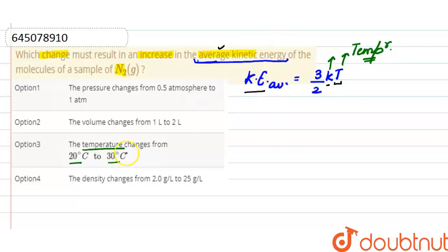So as we can see, only temperature change can change kinetic energy, so this option is correct. When temperature increases, there is an increase in average kinetic energy. In option two, volume changes, which doesn't affect average kinetic energy. In option one, pressure changes, which also doesn't affect it. And in option four, density changes, which also doesn't affect average kinetic energy. So the correct option here is option three: when temperature increases, average kinetic energy also increases.